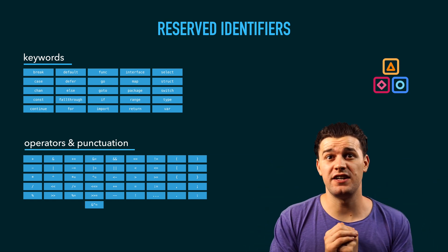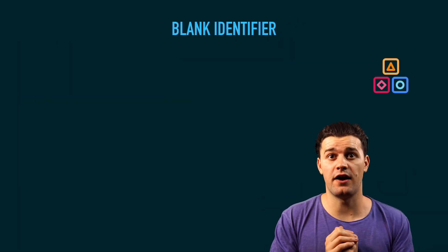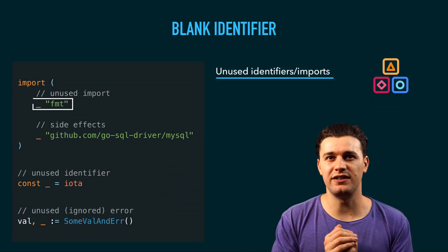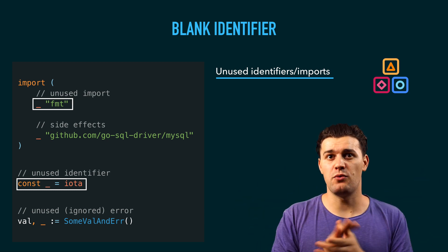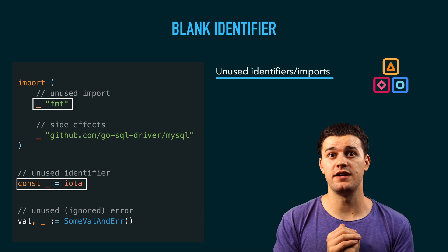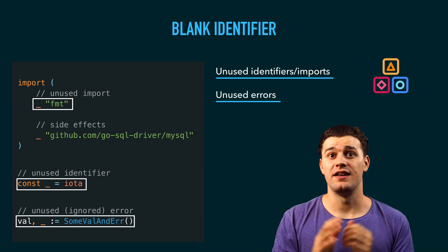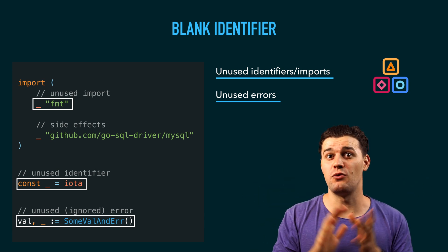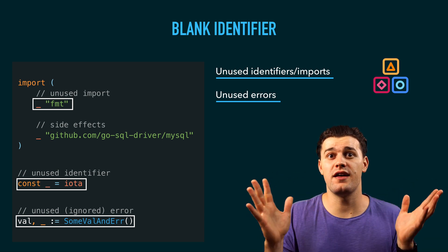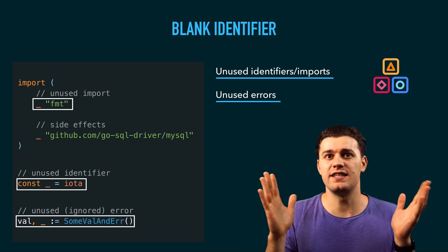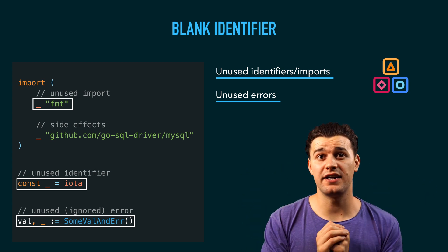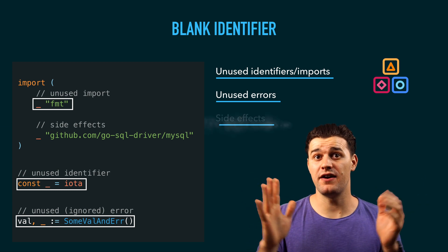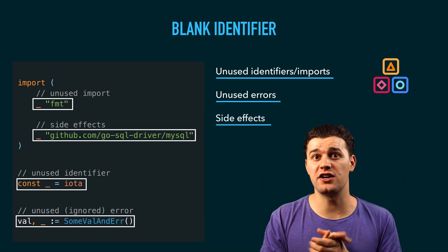There's another type of identifier specific to Go: the blank identifier. It's primarily used for unused variables, constants, or unused imports — otherwise you'll get an error. Another use case is when you have a function that returns two results, one of which is an error. Sometimes we as Go developers ignore that error, and to ignore it you simply underscore it — that's the blank identifier. It's basically going to omit or ignore that error.